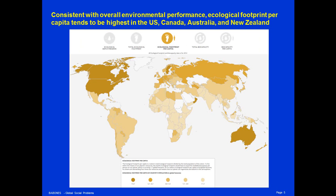Consistent with overall environmental performance on a range of indicators, it's the Anglo-Saxon colonial countries — Australia, New Zealand, United States, Canada — that tend to have the highest ecological footprints. Europe usually does a little better. And the best countries of all are the very poorest countries of sub-Saharan Africa and Southeast Asia. An interesting outlier is Sweden, which has one of the highest ecological footprints in the world, because of a high level of logging and forestry industry and also high levels of meat consumption. But in general, it's the usual suspects — North America and Australasia — that have very high ecological footprints.